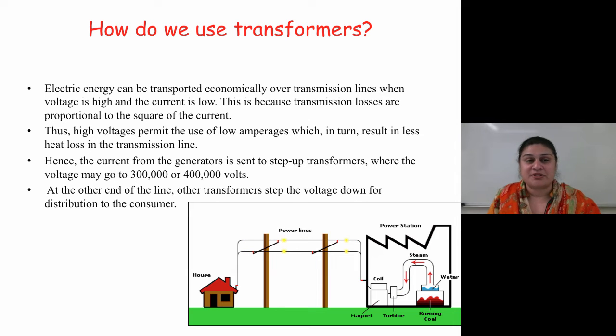Electrical energy can be transported economically over transmission lines when the voltage is high and the current is low. This is because transmission losses are proportional to the square of the current. Thus high voltage permits the use of low amperages which in turn result in less heat loss in a transmission line. Hence the current from the generator is stepped up to transformers where the voltage may go to 300,000 or 400,000 volts.